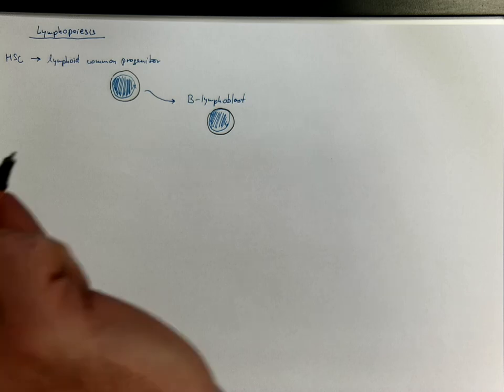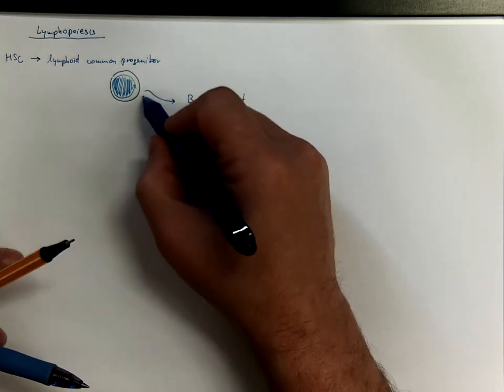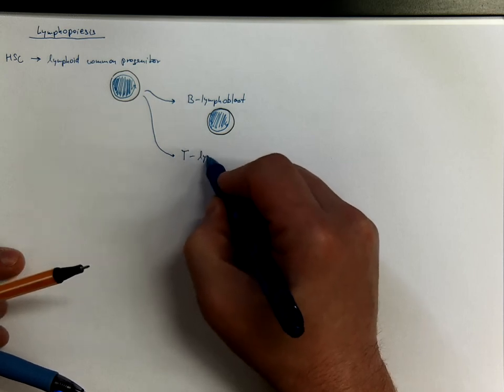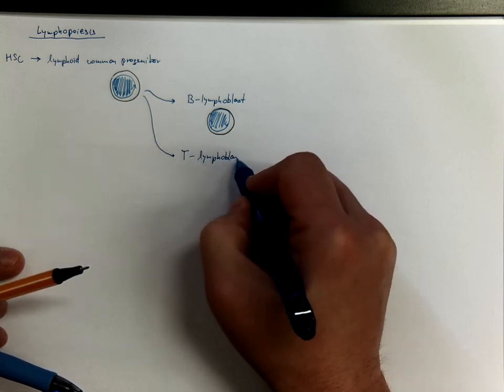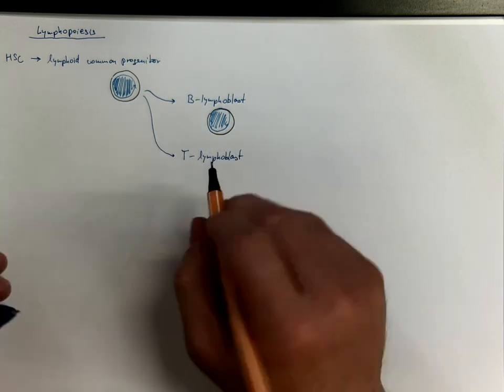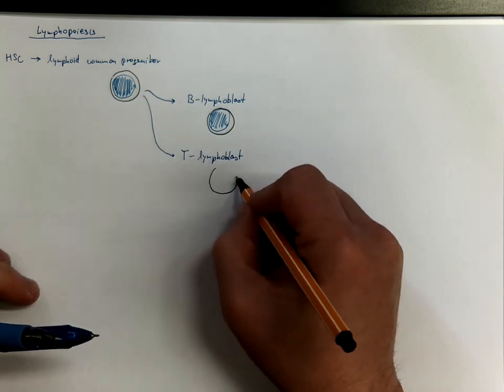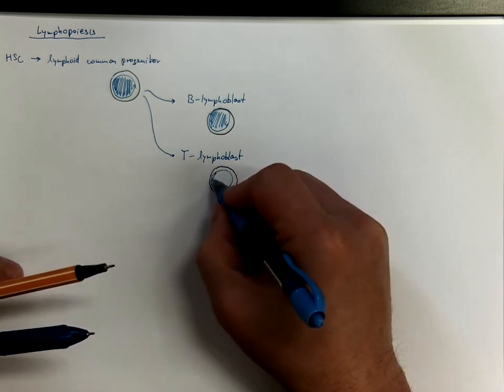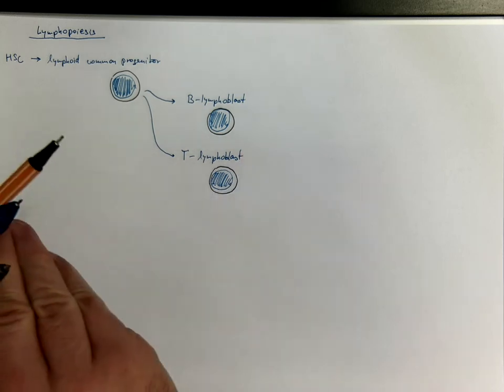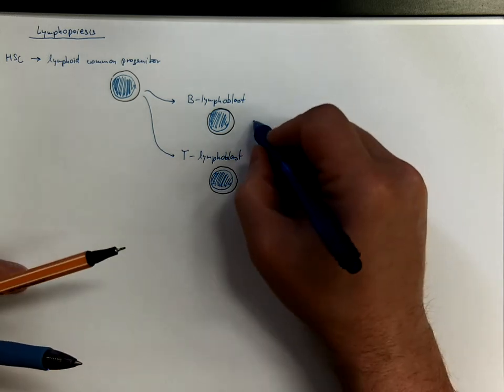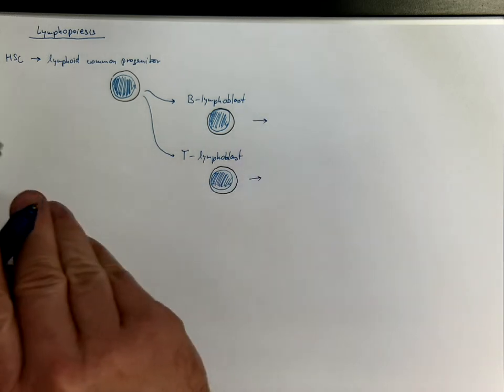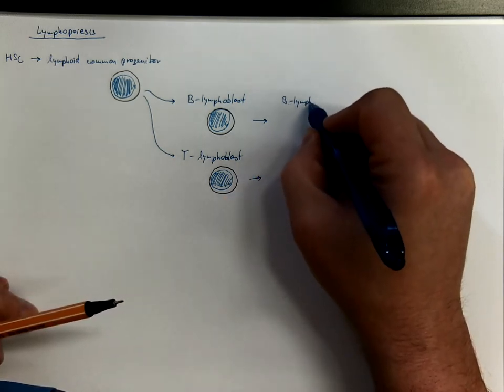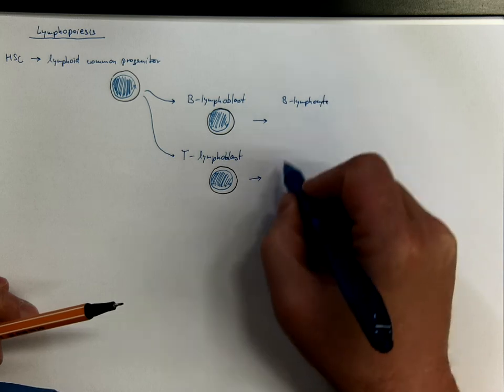Or T lymphoblasts. And these lymphoblasts will mature into corresponding lymphocytes, so B lymphocytes or T lymphocytes.